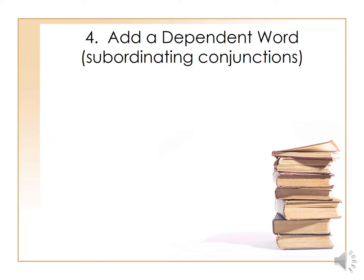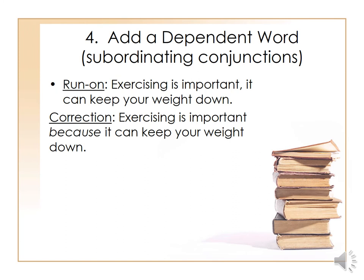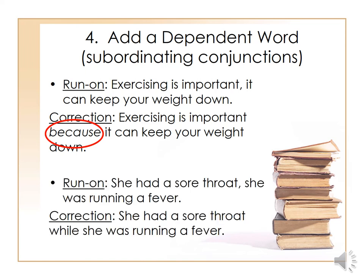The fourth way to solve the problem is to add a dependent word — a subordinating conjunction — in which case we're talking about complex sentences. Look at the run-on and correction: 'Exercising is important because it can keep your weight down.' We use the word 'because,' a subordinating conjunction, with no punctuation because it came in the middle of the sentence. Another example: 'She had a sore throat while she was running a fever.' 'While' is also a subordinating conjunction connecting the two sentences, making it a complex sentence.